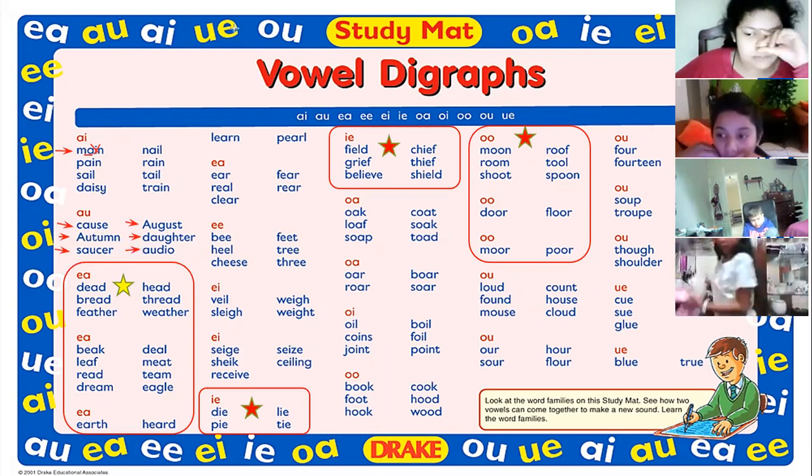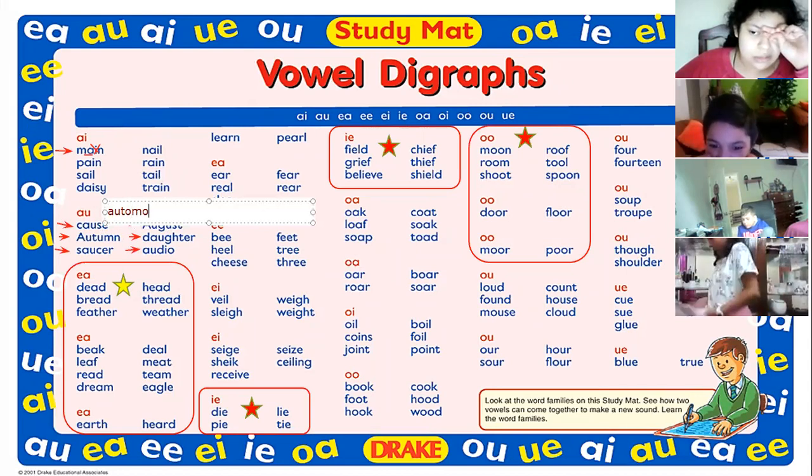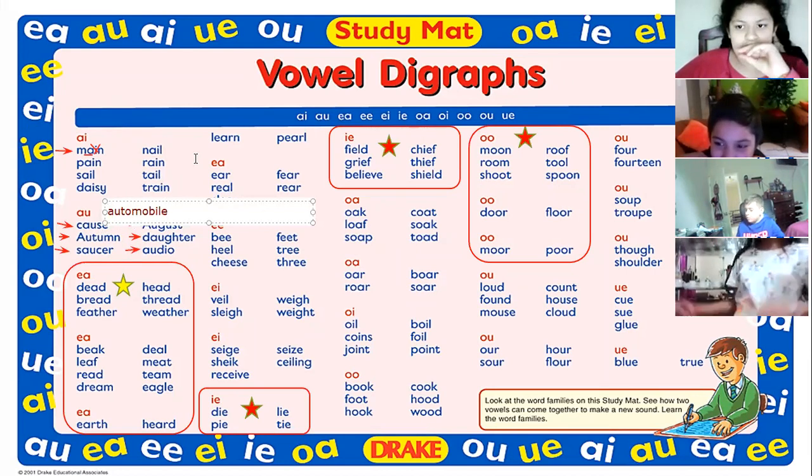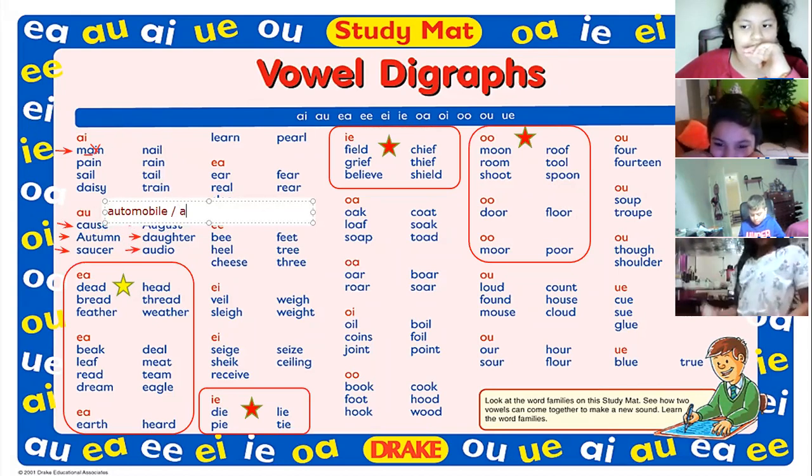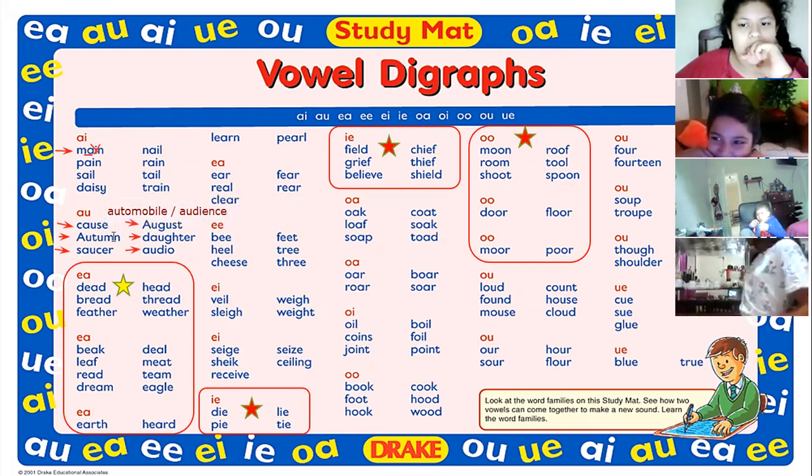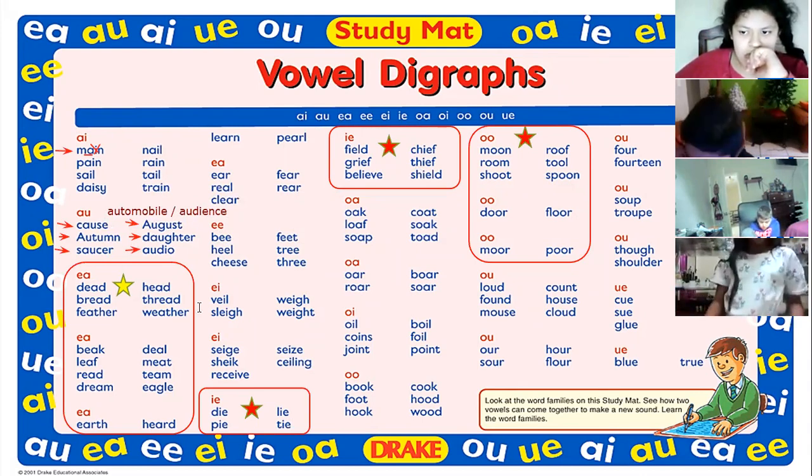August. Not august. Sometimes people say it's doubter, but it's daughter. Because the A-U is O. Audio. Audience. Automobile. Miren. Oro. No es auto. Oro. Automobile. Another one. Audio. Audience.